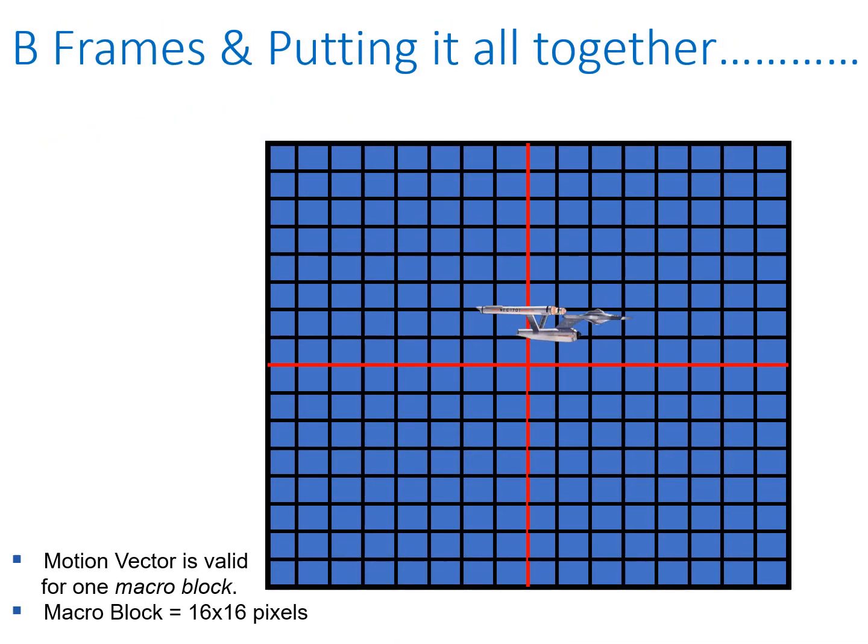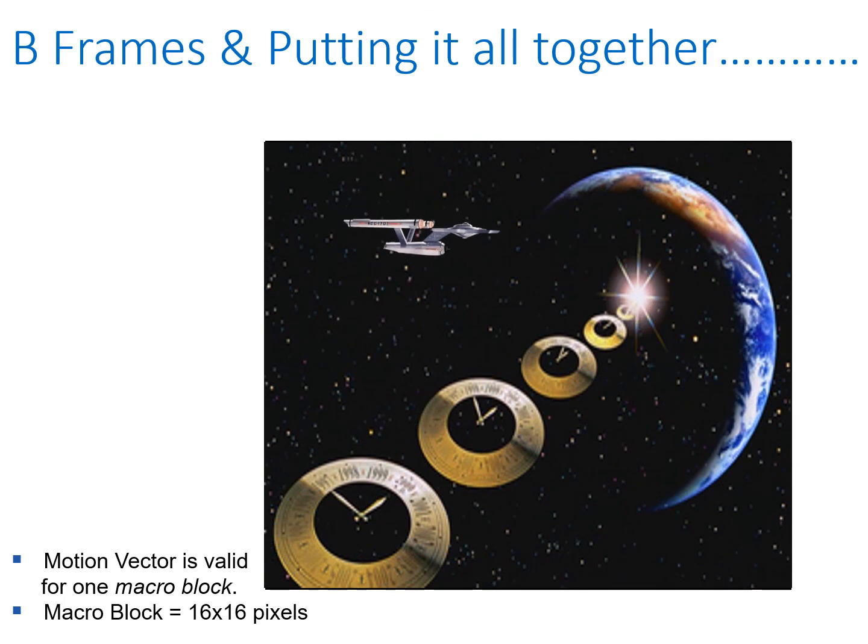So how does this work? Well, if we put it all together, we can now move an object across a macro block, which is 16 pixels by 16 pixels. So the B frame contains all the information on how specific objects moved across this relatively small portion of the screen. That object is then applied to the background, which is derived from the P frames and I frames, and now we have the appearance of motion as that particular object moves across the scene.